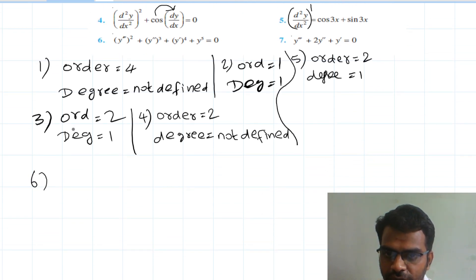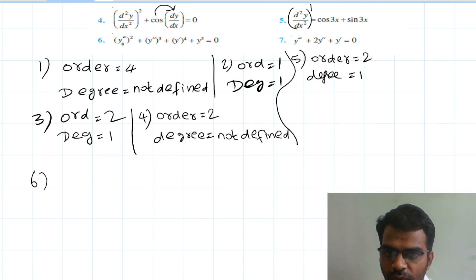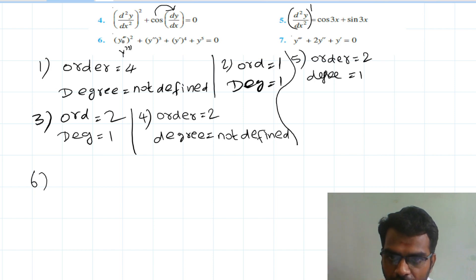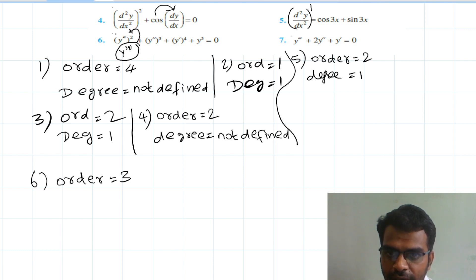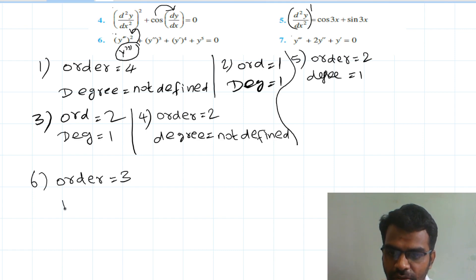Sixth question: (y''')² + (y'')³ + (y')⁴ + y⁵ = 0. Y triple dash is the highest order. Its power value — the highest power value of the highest order derivative y''' is 2, so degree equal to 2.